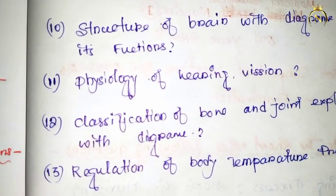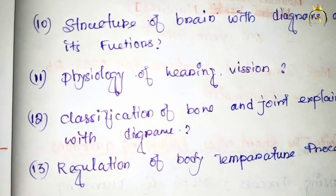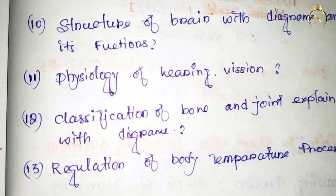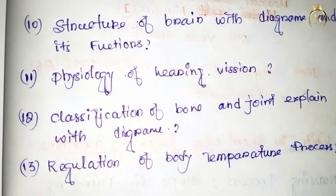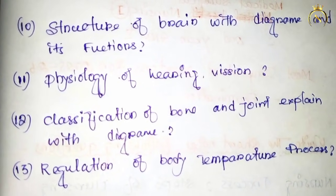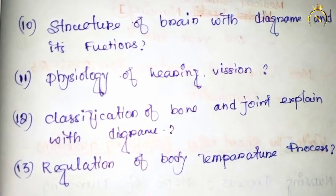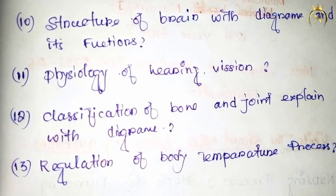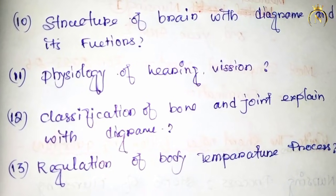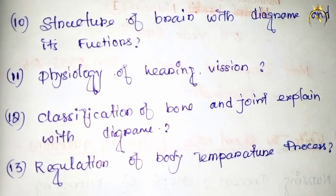Let's go to the next question: structure of the brain with diagram and function. Brain structure and function are most important. Also, physiology of hearing and vision.